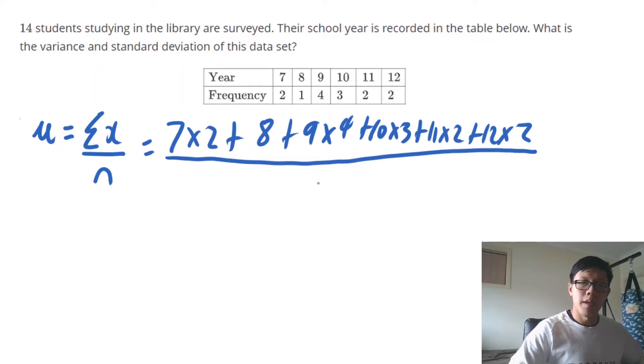I sum all of those up and then I divide by the total number of students which is 14. And that is equal to 67 on 7 which is approximately 9.57 rounded to two decimal places.